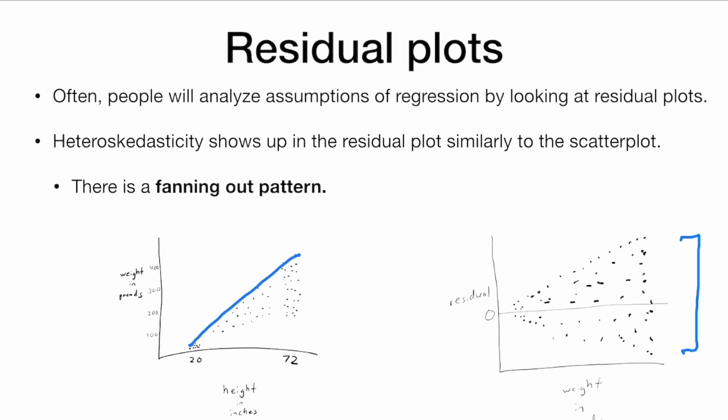We see a fanning out pattern that shows that the variances are not equal for all values of the x variable. This fanning out pattern is called heteroscedasticity, unequal variances.